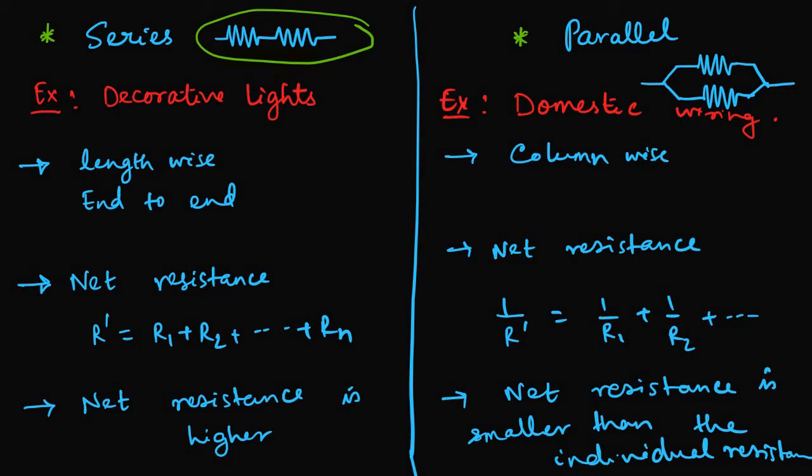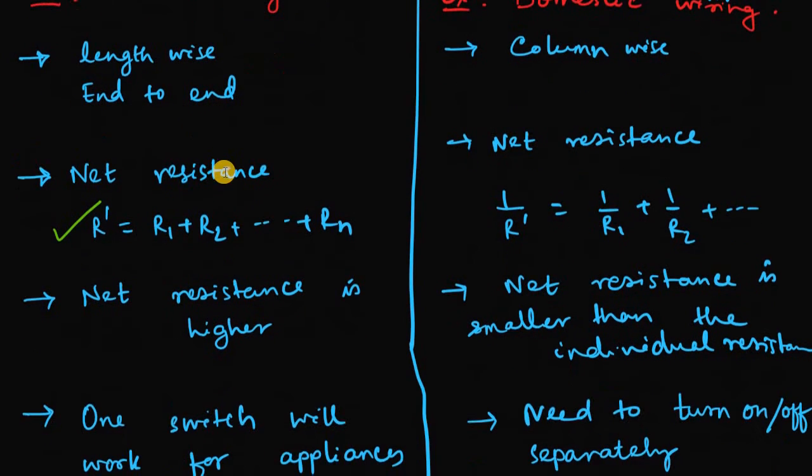I already insisted on the formula. In series combination R' would be R1 plus R2 depending upon the number of resistors we are having. But in parallel combination that formula is the reciprocal and I also proved that the net resistance in case of parallel is basically smaller than the individual resistances whereas in series combination that net resistance is usually higher.